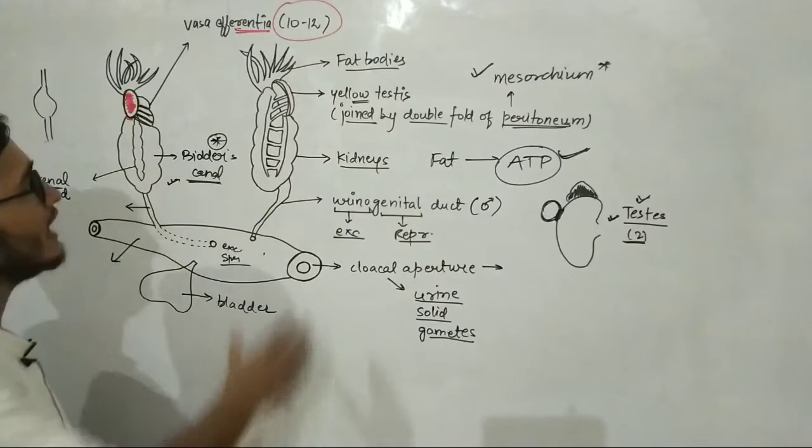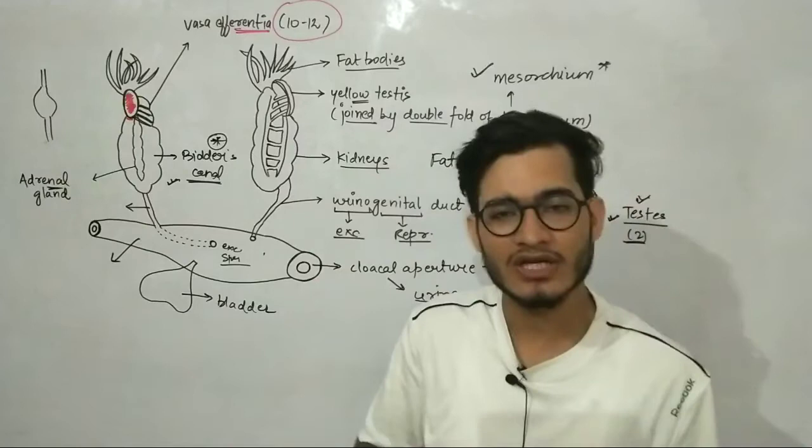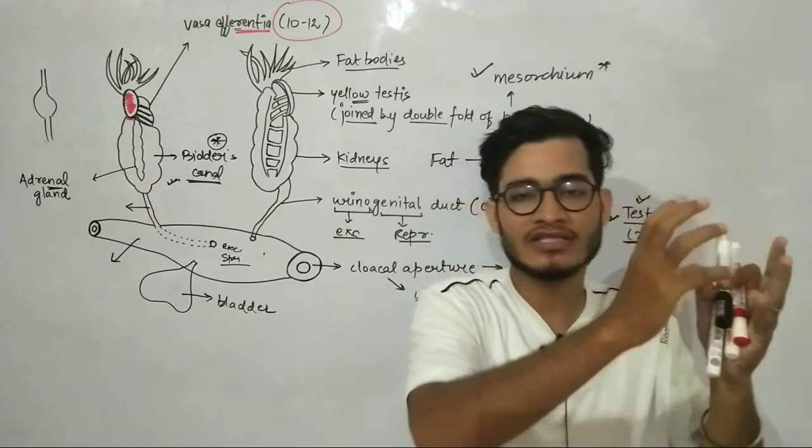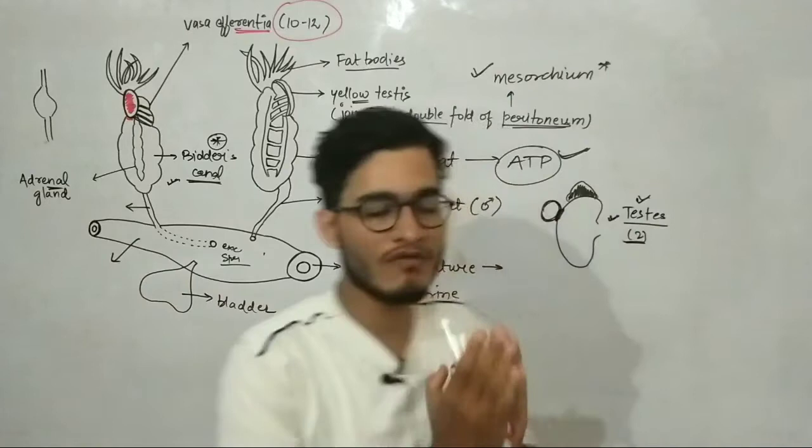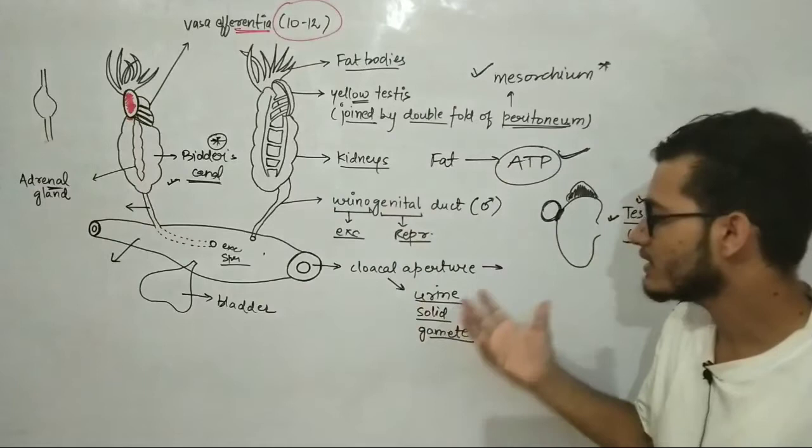So I hope the basic scheme is completely clear. Fat bodies present on top, then your testis are attached to the kidney with the help of mesortium. Kidney has adrenal gland present inside. The testis will open into vas efferentia, then it will be opened into the urinogenital tract via Bidder's canal. After that all these things will open into cloaca and from there everything will exit outside. This is about the basic terminology and all the important things which you need to know, which you require to know in case of male reproductive system of frog.